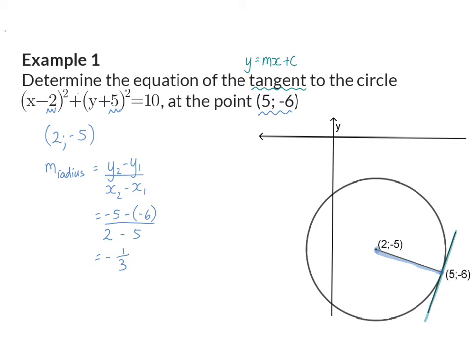Because I know that a tangent is always perpendicular to a radius I can make the conclusion that the gradient of my tangent will then be the reciprocal of this which is three over one and the opposite sign, which is positive.